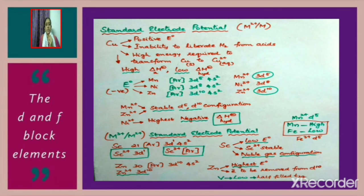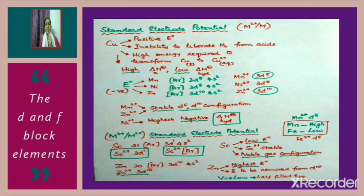Next, we shall discuss the standard electrode potential M²⁺/M. The standard electrode potential of copper is +0.34 V, so copper has a positive standard electrode potential. Copper lies below hydrogen in the reactivity series and therefore cannot liberate hydrogen from acids. A large amount of energy is required to transform Cu(s) to Cu²⁺(aq). The positive E⁰ value of copper is due to high enthalpy of atomization and low hydration enthalpy.